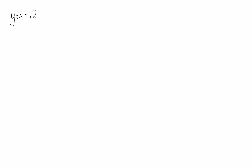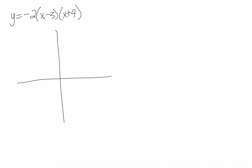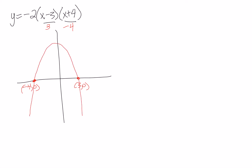Now let's look at another factored form equation: y = -2(x - 3)(x + 4). The -2 out front tells us the parabola opens downward and is a little narrower. The key values are the -3 and +4 in the brackets. Doing the opposite, our x-intercepts are at (3, 0) and (-4, 0). The graph crosses at those points and is upside down.